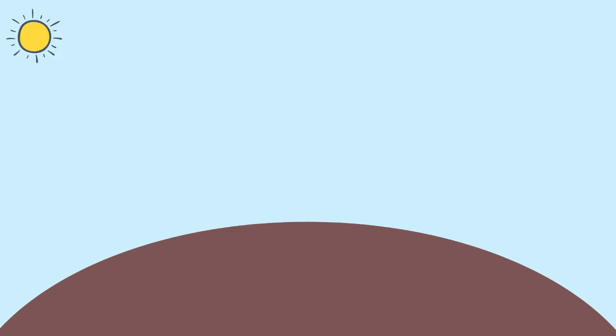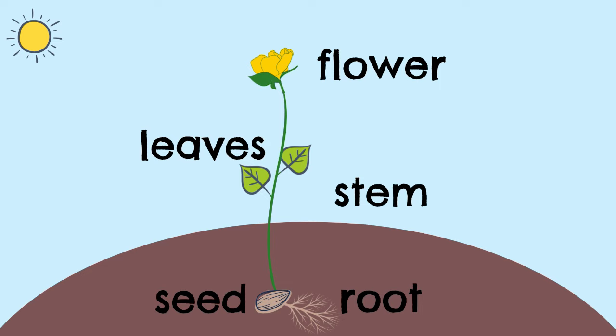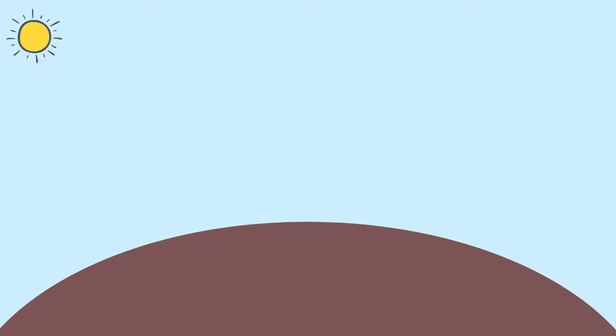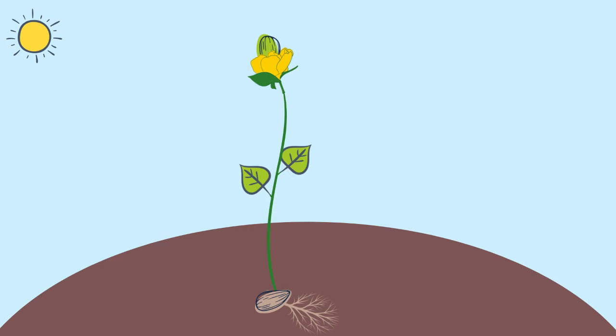There are different parts of a plant: seed, root, stem, leaves, flower, fruit. Each part of a plant has a purpose. Each part does what it needs to do. Seeds grow roots that get water and minerals from the soil down in the ground.